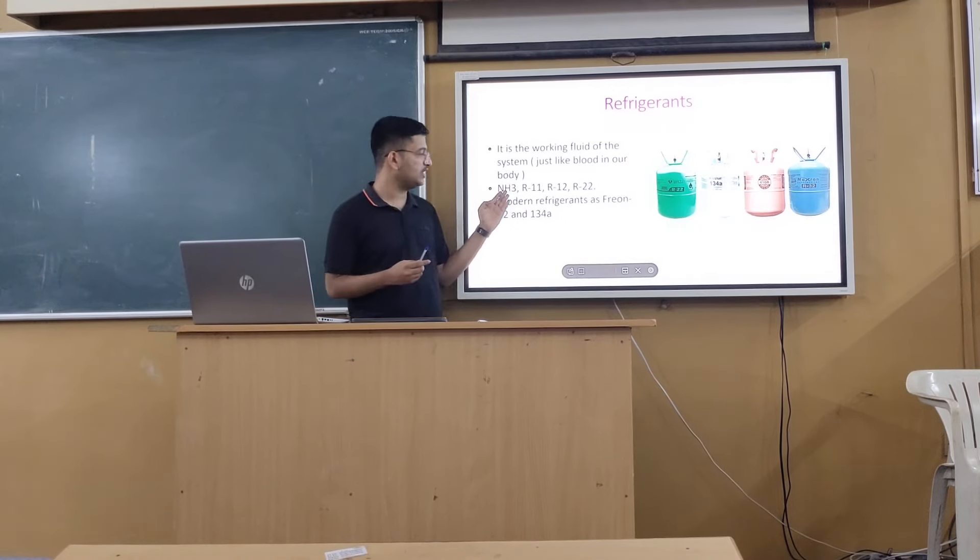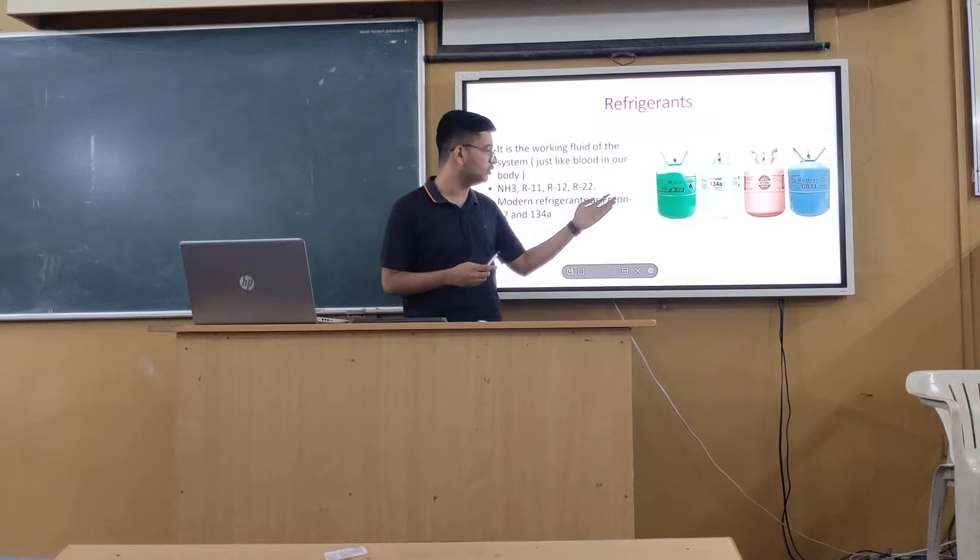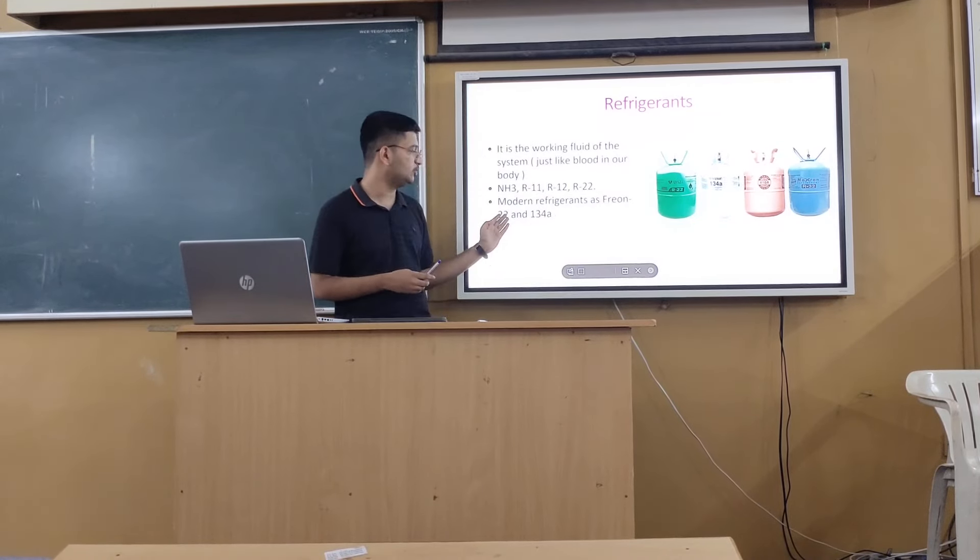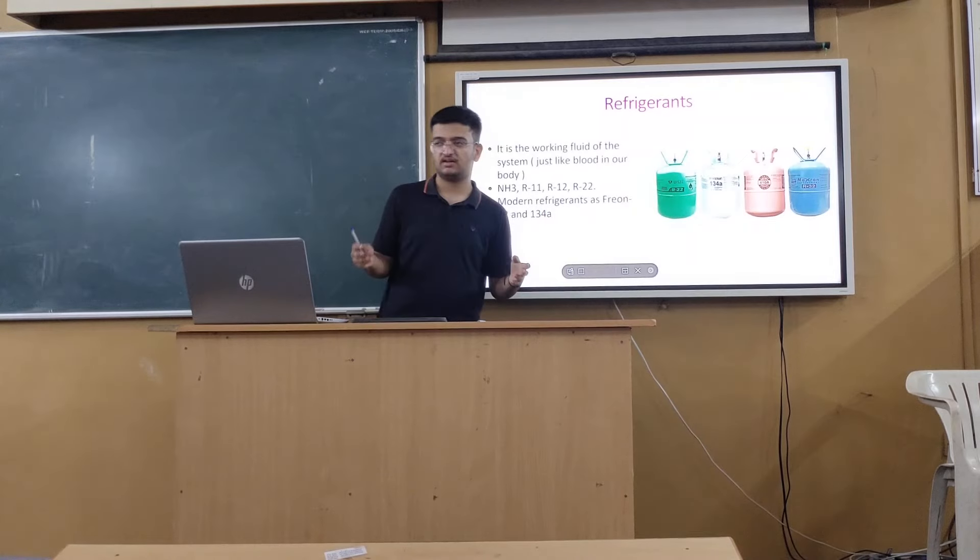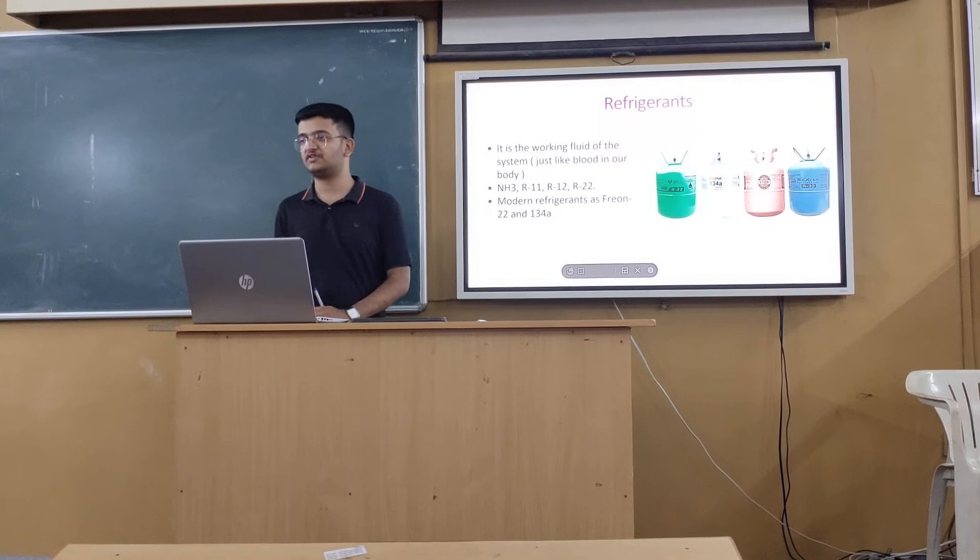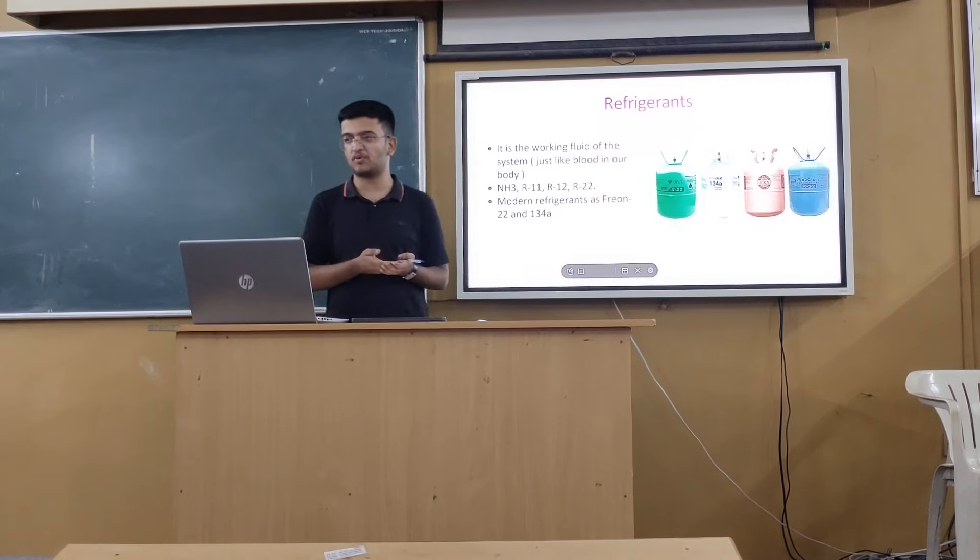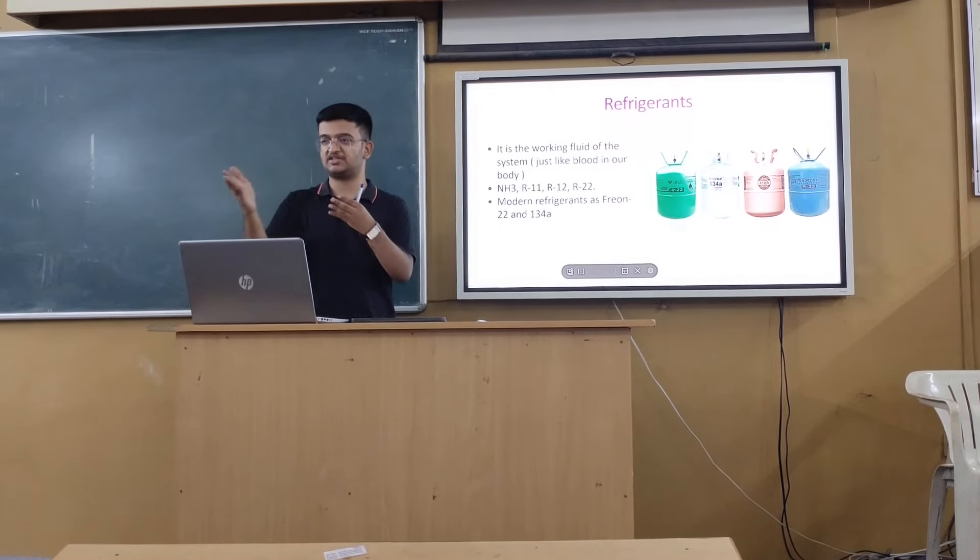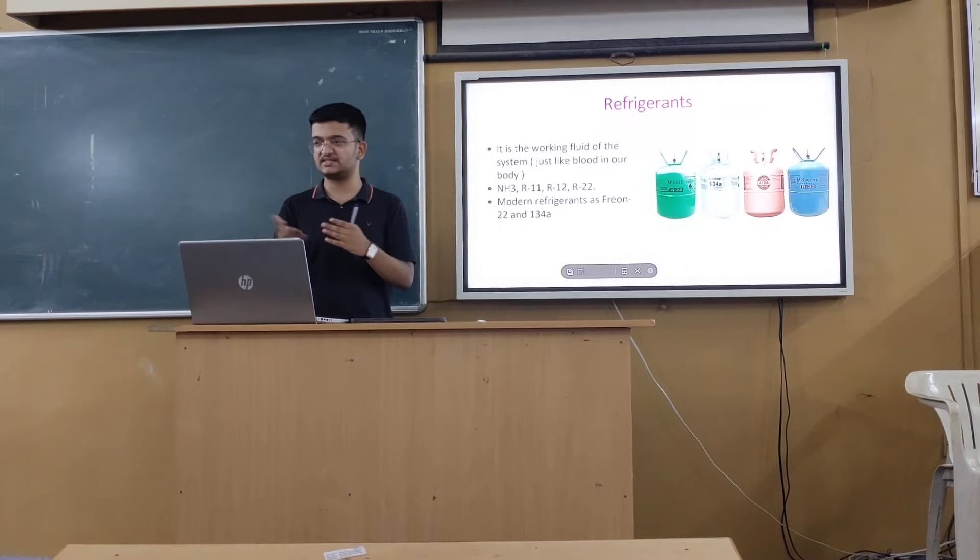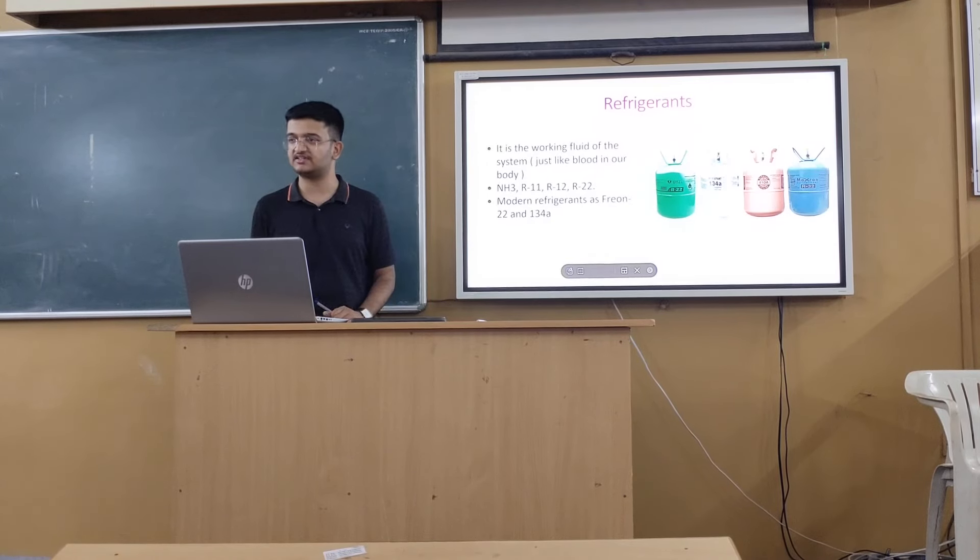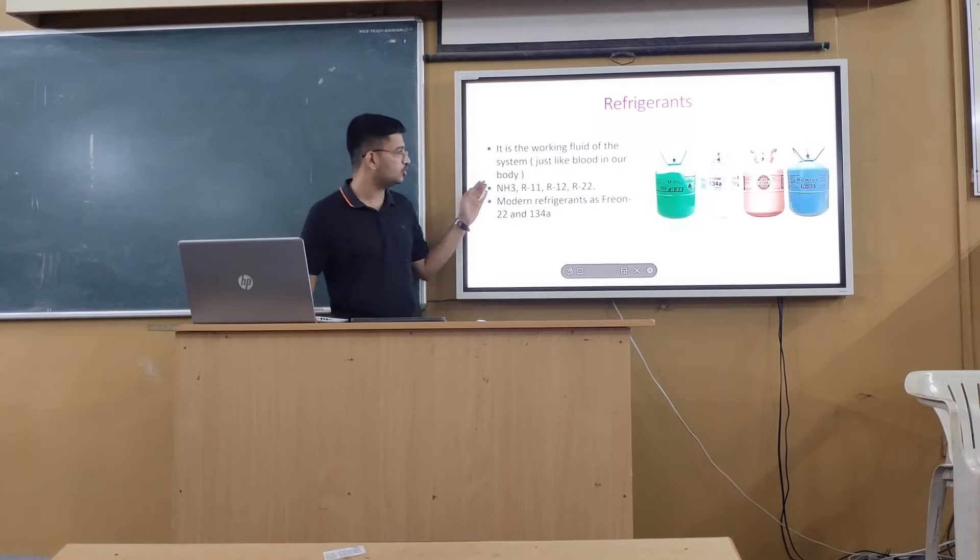Commonly there are like ammonia, R11, R22, and modern refrigerants like R-410A and R-134a. These are different types of commercially available refrigerants. Selection of refrigerant is based upon its properties: what is boiling point, at what temperature, what pressure, critical point, these characteristics. You might study them in thermodynamics in the next semester.